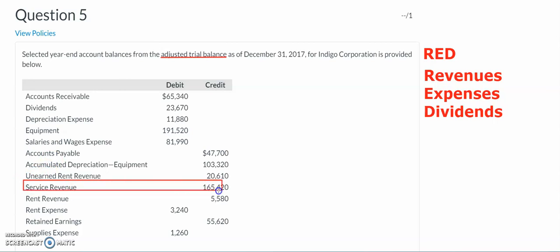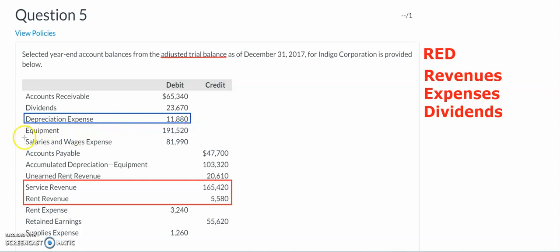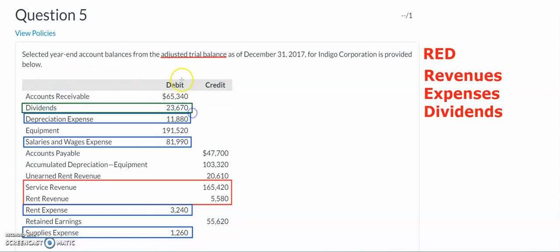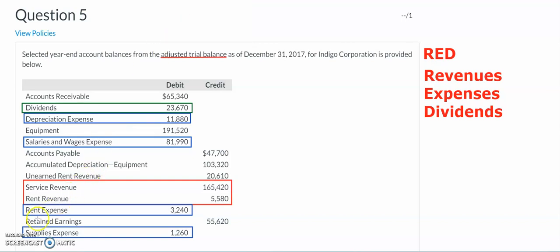Looking through this listing, this company has service revenue and rent revenue. From the expenses, this company has depreciation expense, salaries and wages expense, rent expense, and supplies expense — so I'm going to be closing out all of these accounts. I also see that we have dividends. After recording all of these closing entries, I'm going to see my retained earnings being updated, so I want to note what my beginning retained earnings is before I start.